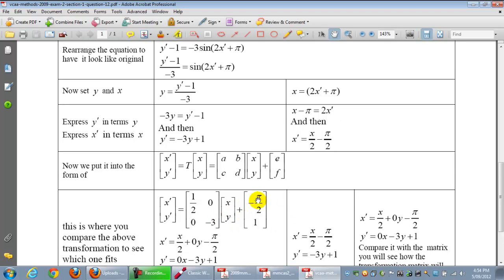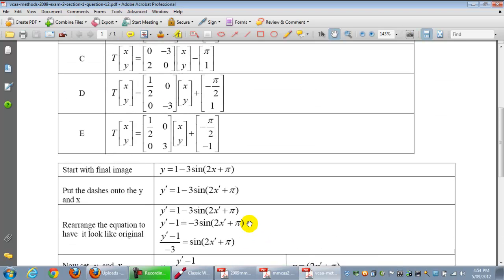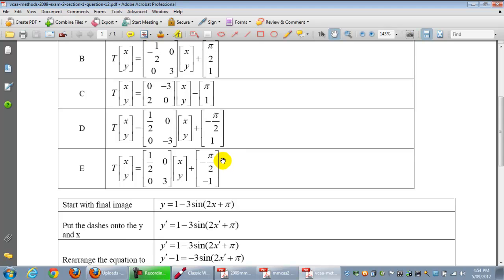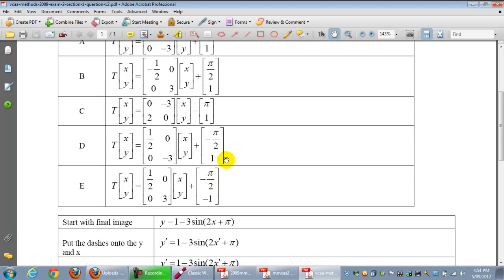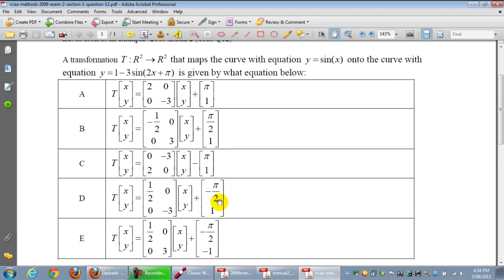Could you have just looked at the bottom part? Well, no, because they were sort of catering for that, -π/2 and 1. You could have just gone for that, and that would have given you the answer, because that's the only one that actually has -π/2 and a 1.